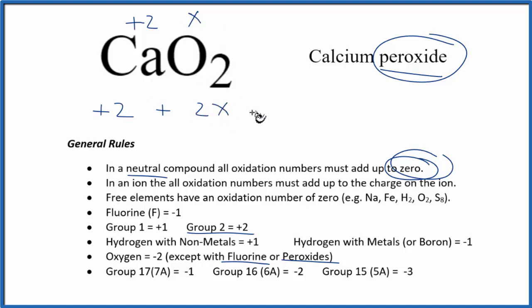And all of that adds up to zero. So we have 2 plus 2X equals zero, so 2X equals minus 2, divide both sides by 2, X equals minus 1.